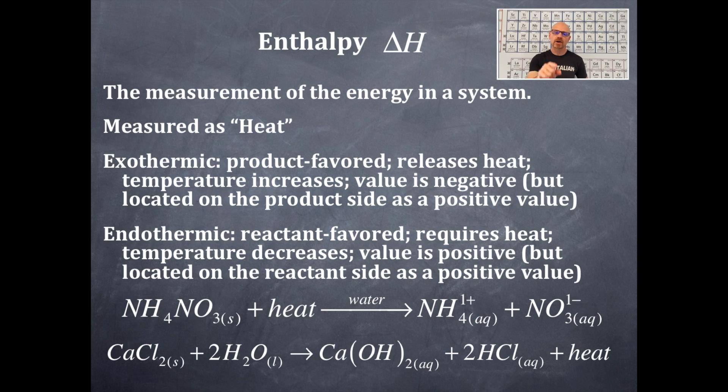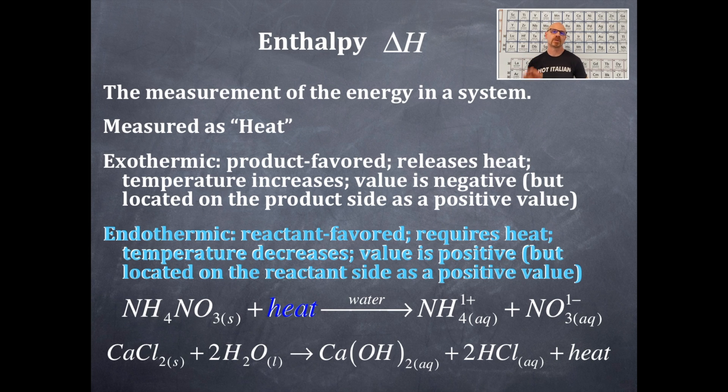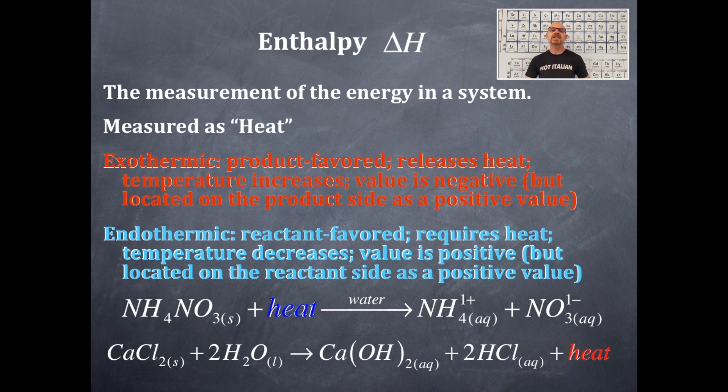So if the heat is on the reactant side, then that is endothermic. I put the blue there because that generally is requiring heat. That's the temperature decreasing. If the heat term is on the product side, then it is exothermic. And that's liberating heat, giving off heat. It's a negative delta H, but it's on the product side.